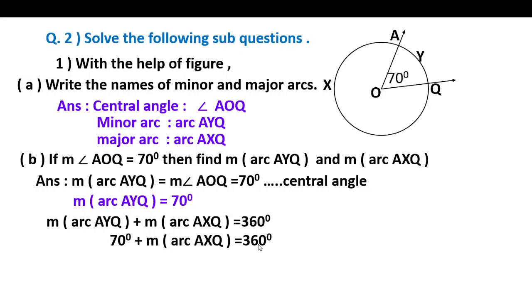70 plus measure of arc AXQ equals 360. Transfer 70 to get measure of arc AXQ equals 360 minus 70. Measure of arc AXQ equals 290 degrees.